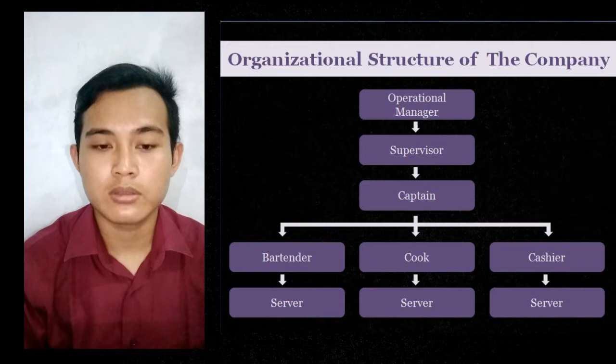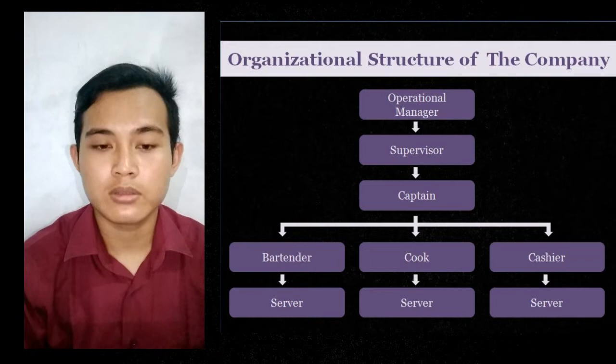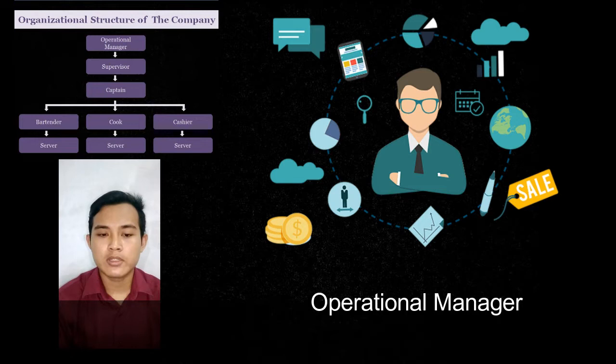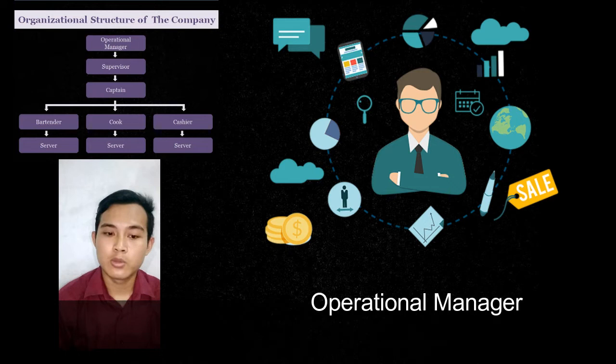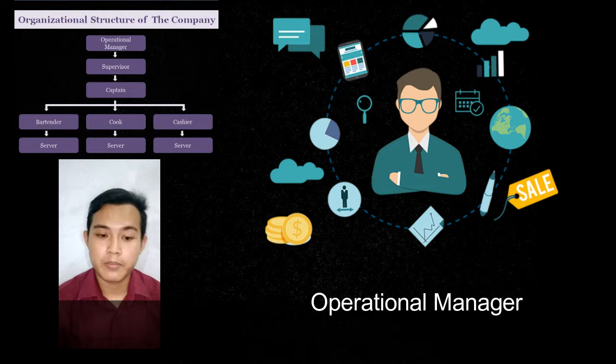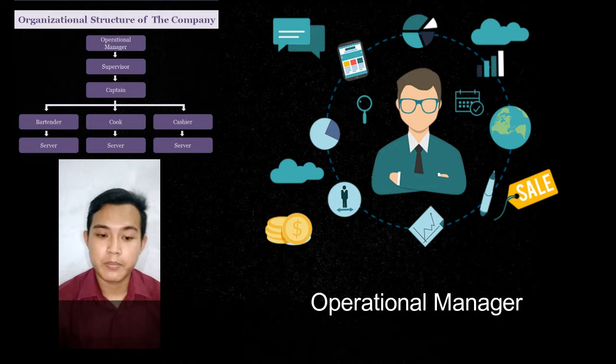The operational manager's job is to determine the company's operational policy, do planning and organizing, delegate authority to the supervisor, lead coordination meetings, control the budget and expenses needed for operational coffee shop, and control the coffee shop situation.